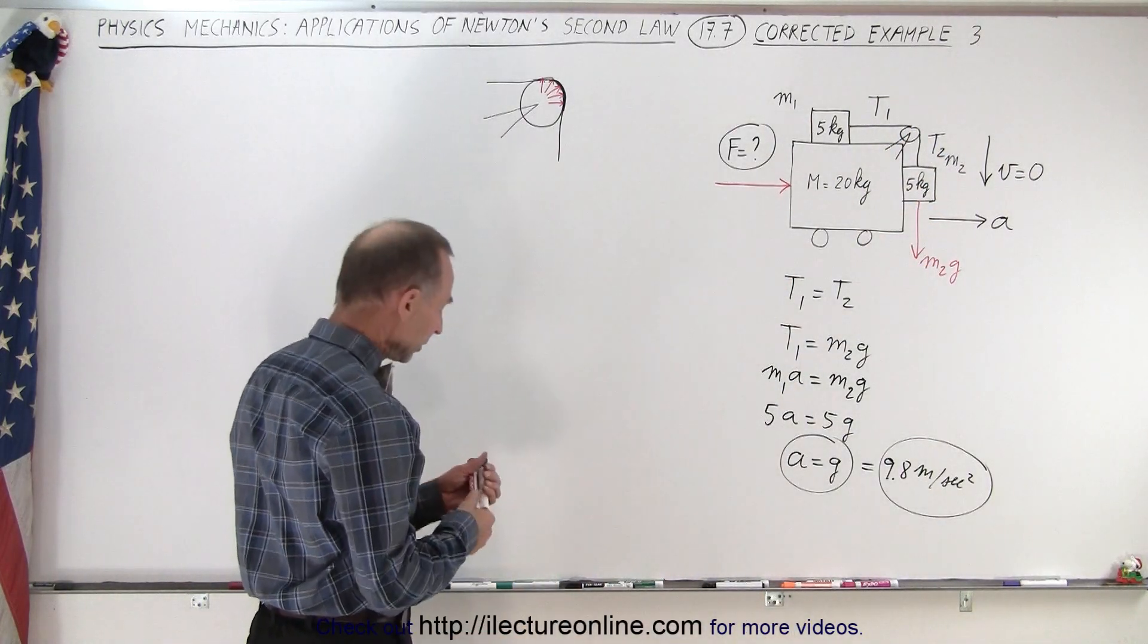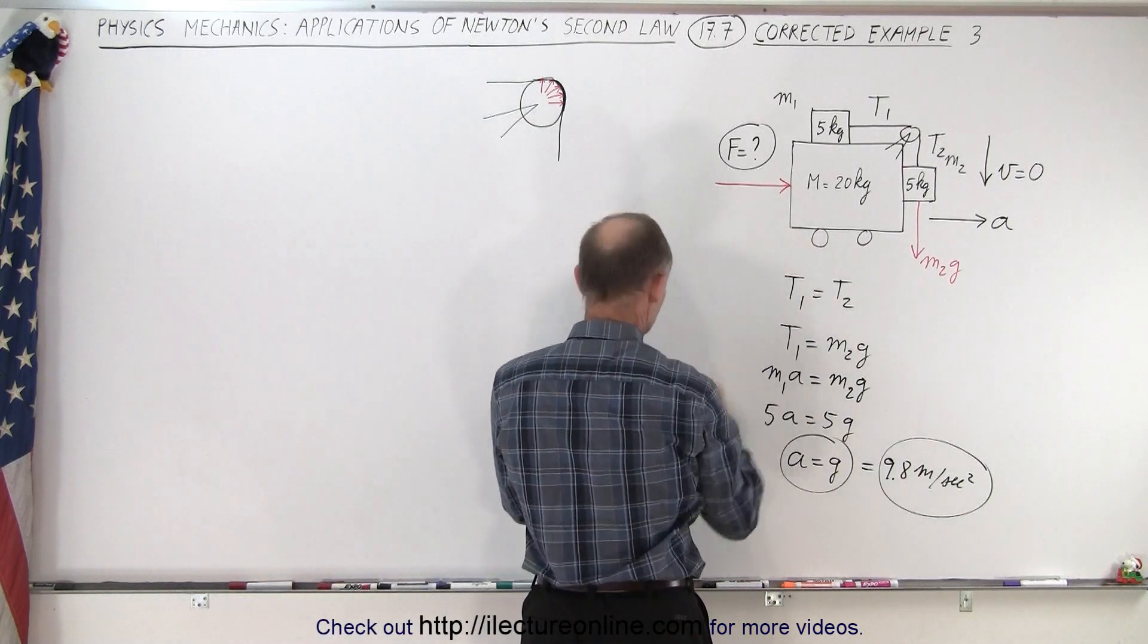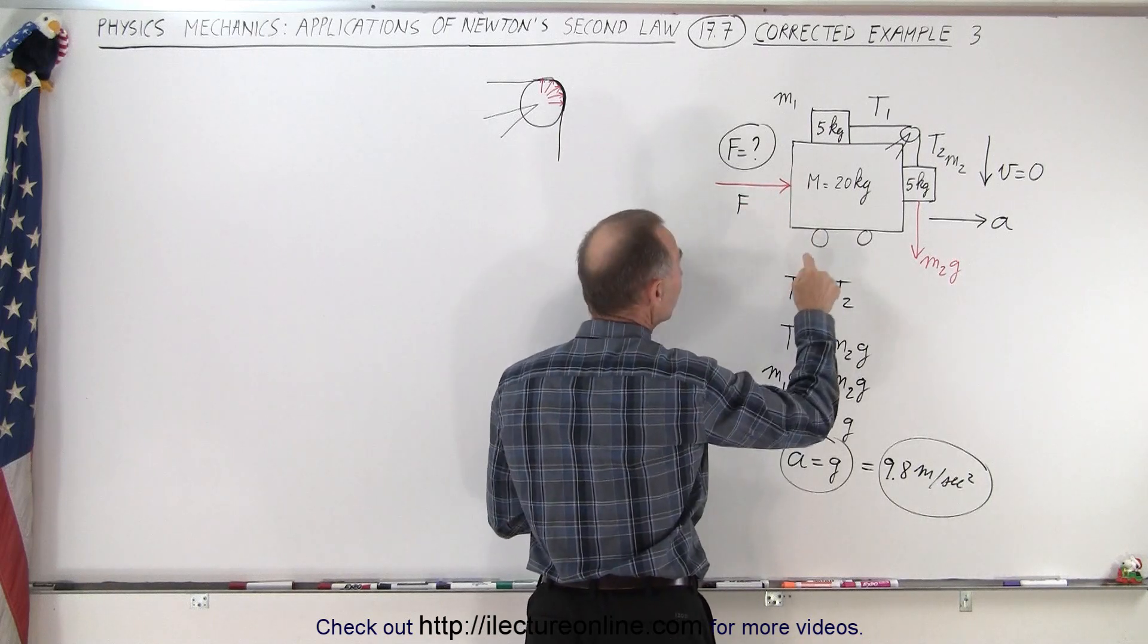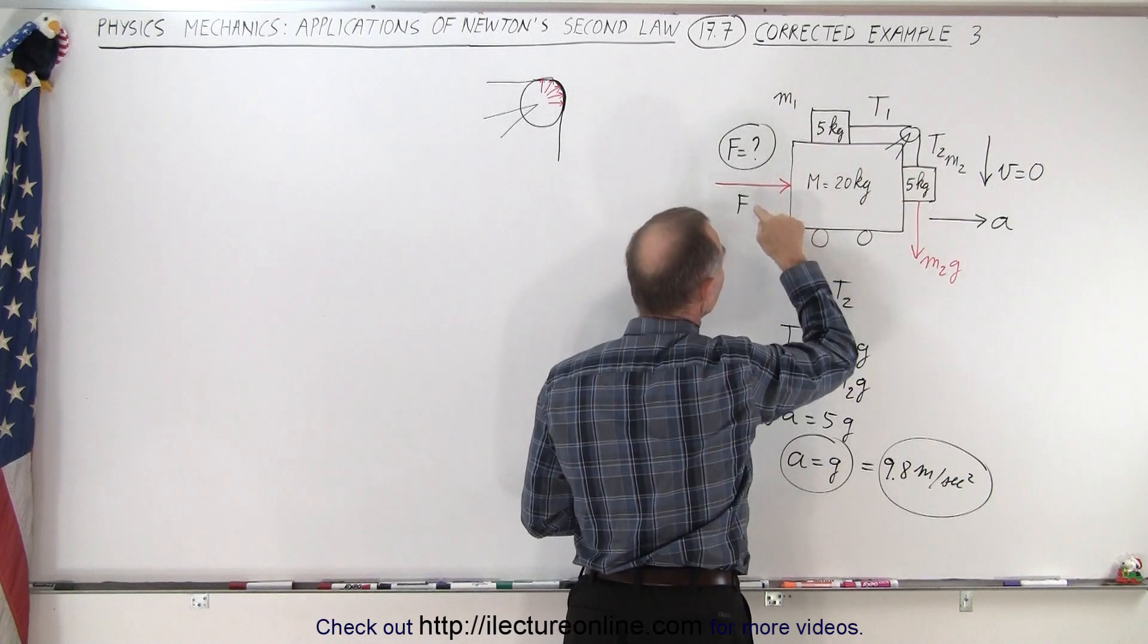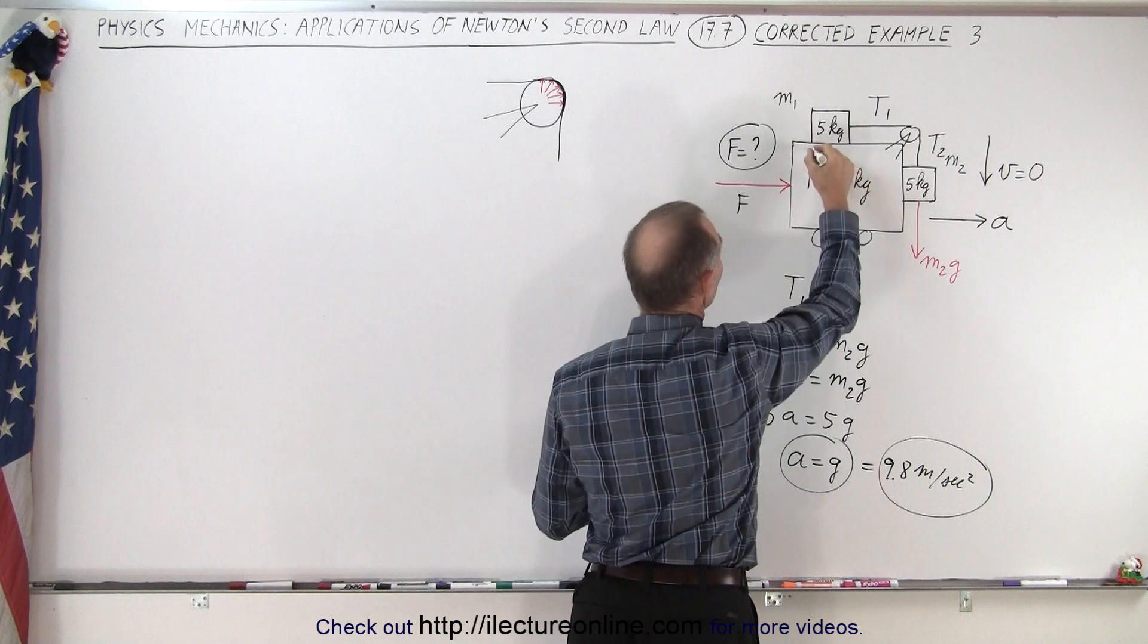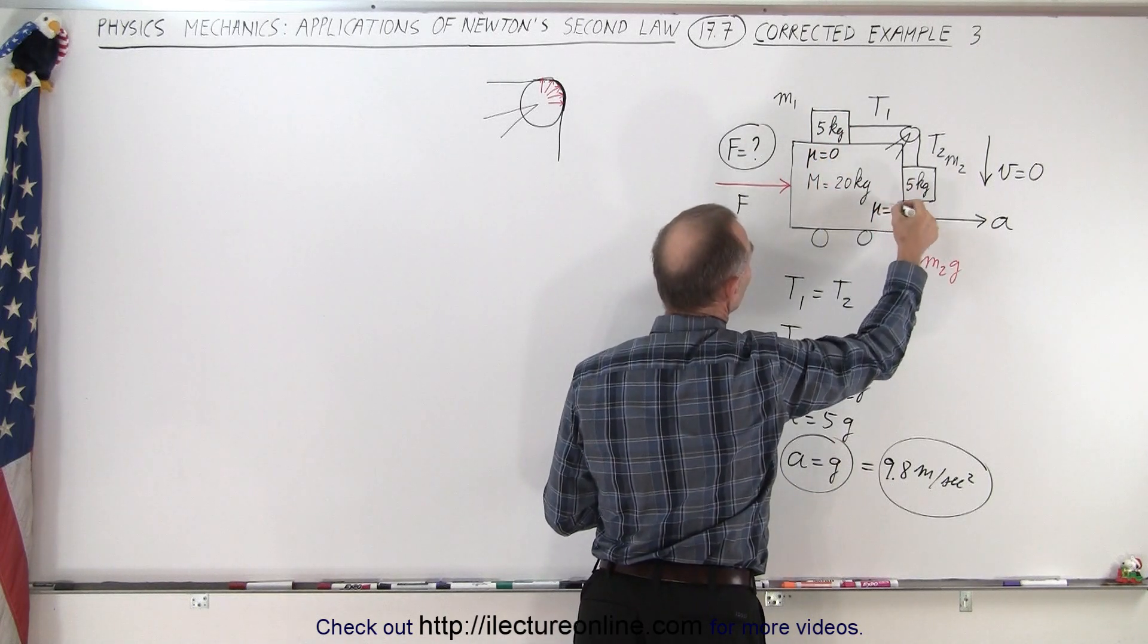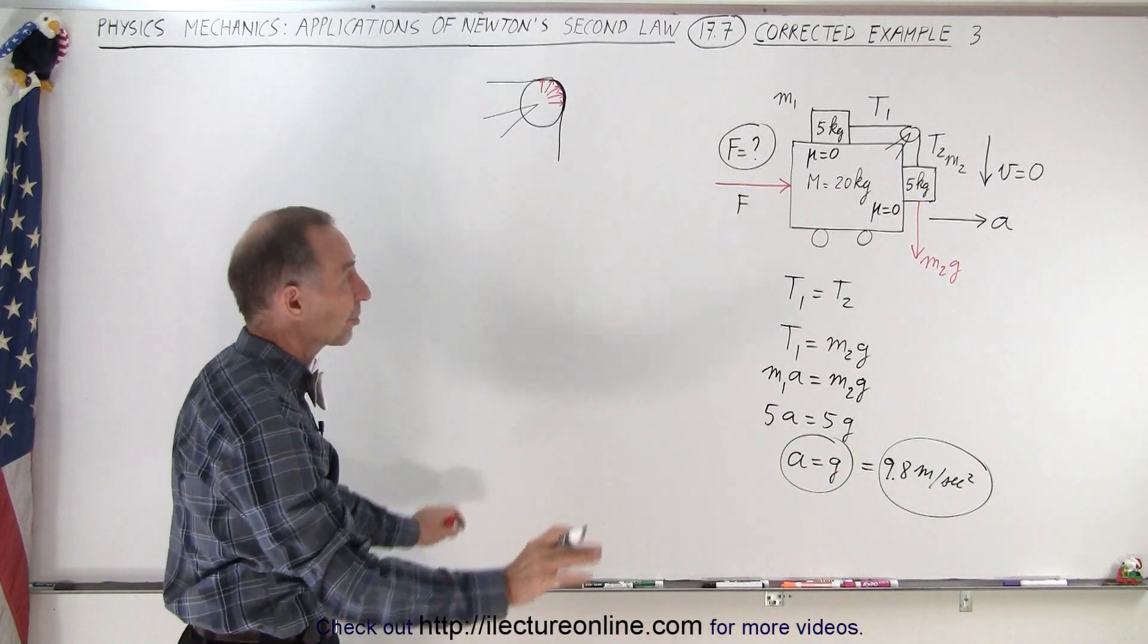So how much force is that required? Well, that means this force here will be the force needed to accelerate this object, this object, and this object. And you may wonder, how can this force push to the right and accelerate this object? Because there's no friction between those two surfaces, and no friction between those two surfaces. I forgot to write that down, but no friction anywhere. And so therefore, you'd say, how can this block make this one accelerate with no friction?